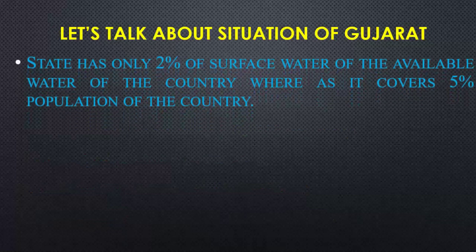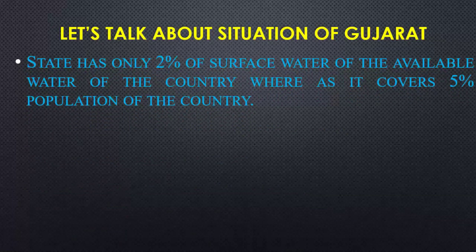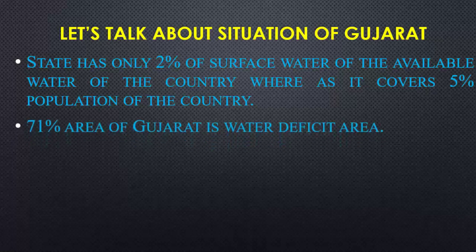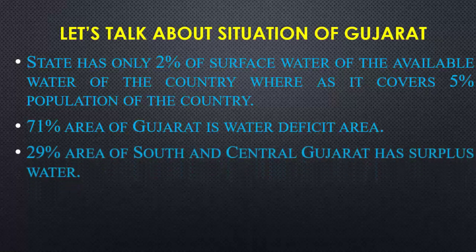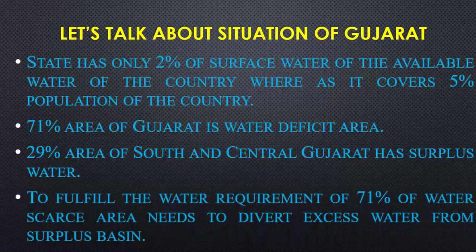Let's talk about the situation of Gujarat first. Gujarat state has only 2% of the surface water available in the country, whereas it covers 5% of the country's area. This means there will definitely be water scarcity. 71% of Gujarat is a water-deficit area, while 29% of south and central Gujarat has a surplus amount of water. To fulfill the water requirement of the remaining 71%, excess water from the surplus basin needs to be diverted.